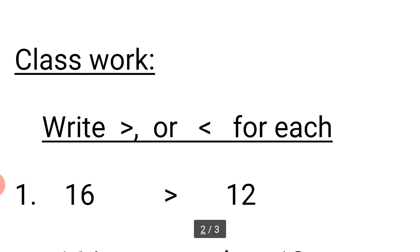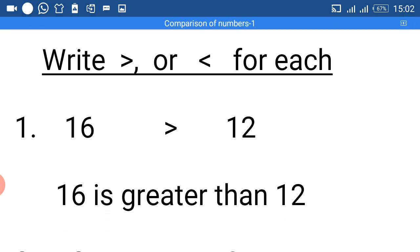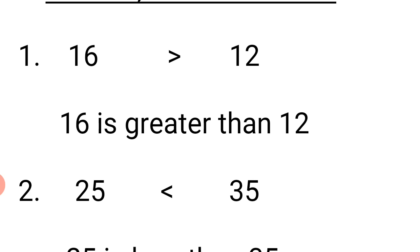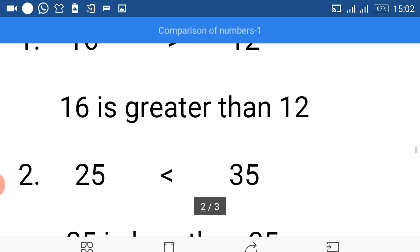Now let's go to classwork. The classwork instruction says: write greater than or less than for each. Number 1: 16 and 12. 16 is more than 12, so we say 16 is greater than 12. If you want to represent it with a sign, put your greater than sign in between 16 and 12. We demonstrate how it is written by bending our right arm — it will face the same direction the sign in between 16 and 12 is facing.